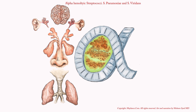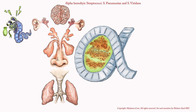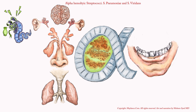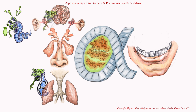Remember that Streptococcus pneumoniae is bile soluble. To memorize this, we draw a snake that is afraid of the bottle of bile. Also remember that these snakes are afraid of optochin — we draw the optochin on the other side to help memorize that pneumococci are optochin sensitive. To depict the MOPS pathologies, we draw the pneumococci on the lungs for pneumonia, and on the sinuses, middle ear, and brain for sinusitis, otitis media, and meningitis.